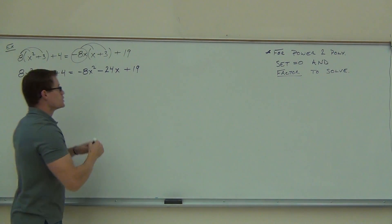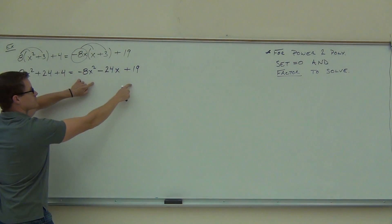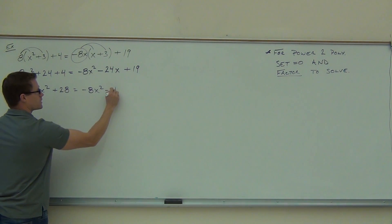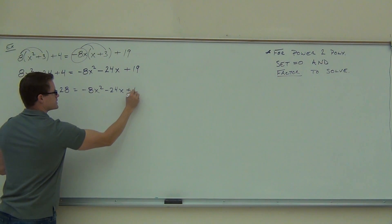And then this plus 19 is at the back end. Now again, you do have options. You could move these to this side or these to this side. What we're going to do first is combine like terms and probably move these ones over here because of that negative 8x². We want to make that positive somehow. So combine like terms here. We'll have our 8x² + 28 equals negative 8x² - 24x + 19.